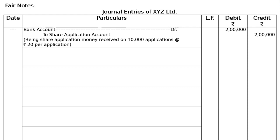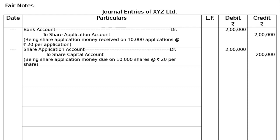First, application money is received, then it becomes due. Then we transfer to Share Capital Account. Next entry: Share Application Account debited to Share Capital Account — Rs.2,00,000 to Rs.2,00,000. Narration: being share application money transferred on 10,000 shares at the rate of Rs.20 per share.